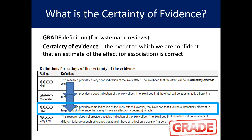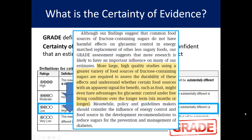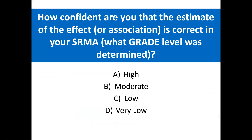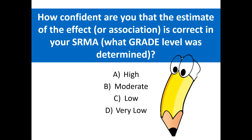An overall rating of low means that this research provides some indication of the likely effect. However, the likelihood that the effect will be substantially different from what the research found is high. This is supported by the authors' conclusion that more high-quality studies are needed to clarify the effects. Review your approximate GRADE assessment and indicate what grade level you determined for the outcome you assessed in your SRMA. Consider whether you feel this corresponds to how confident you feel in the conclusions drawn, and whether this impacts how you will now read SRMAs.